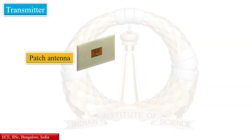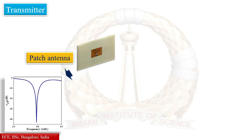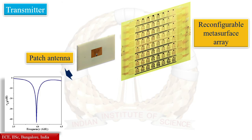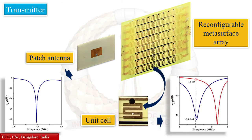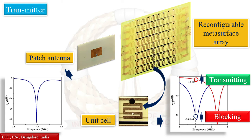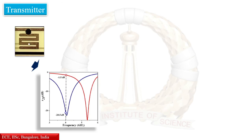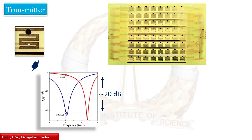The transmitter consists of an antenna — in our case, a microstrip antenna — which is designed to operate at the desired frequency. In front of this antenna is a reconfigurable metasurface array. The unit cells of this array can toggle between transmitting and blocking states by turning on and off a diode embedded in it. While the magnitude of transmission through a unit cell changes significantly, by as much as 20 dB or more, this range of variation is reduced when one uses these as a finite-sized array.